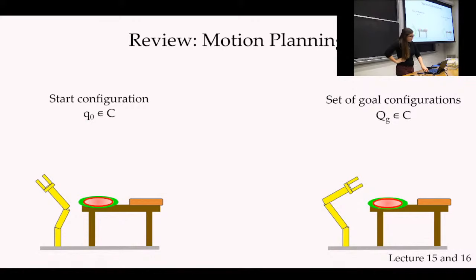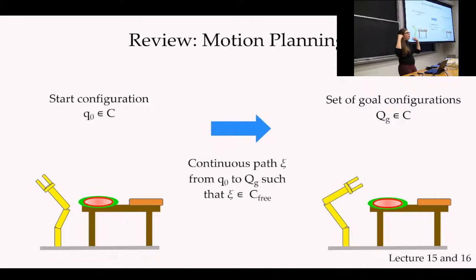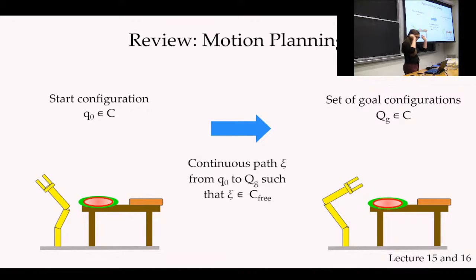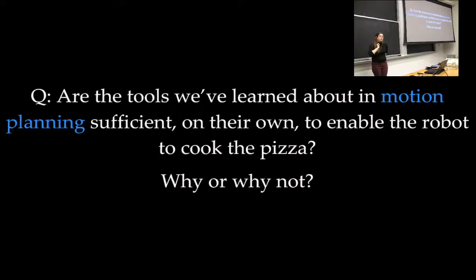You all know motion planning from lectures 15 and 16. In the most vanilla form, motion planning is: given a start configuration and a set of goal configurations, our most basic motion planners — like the RRT from homework nine — find a path from your start to your goal such that you're collision free. I'm reintroducing a bit of notation because it'll help us later. So the question I'll pose is: have we already solved the problem? Can the robot cook pizza if all I give you is an RRT?